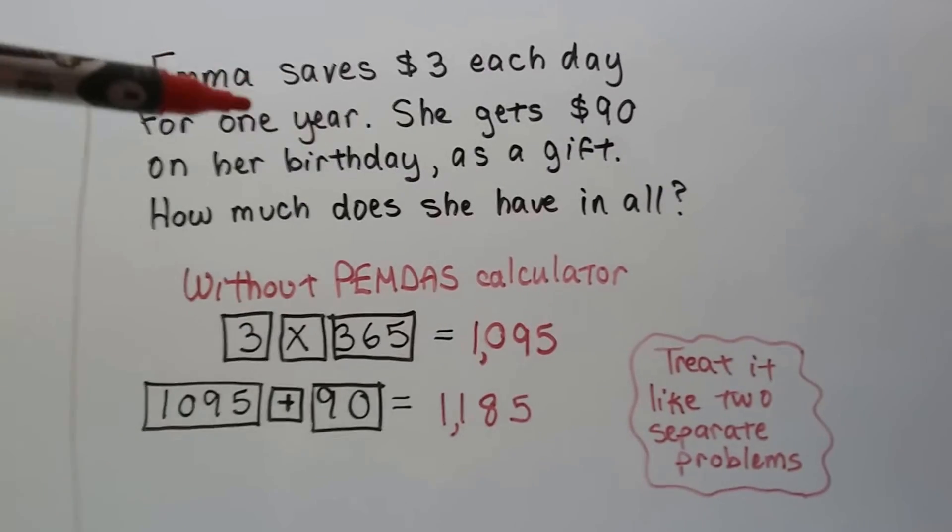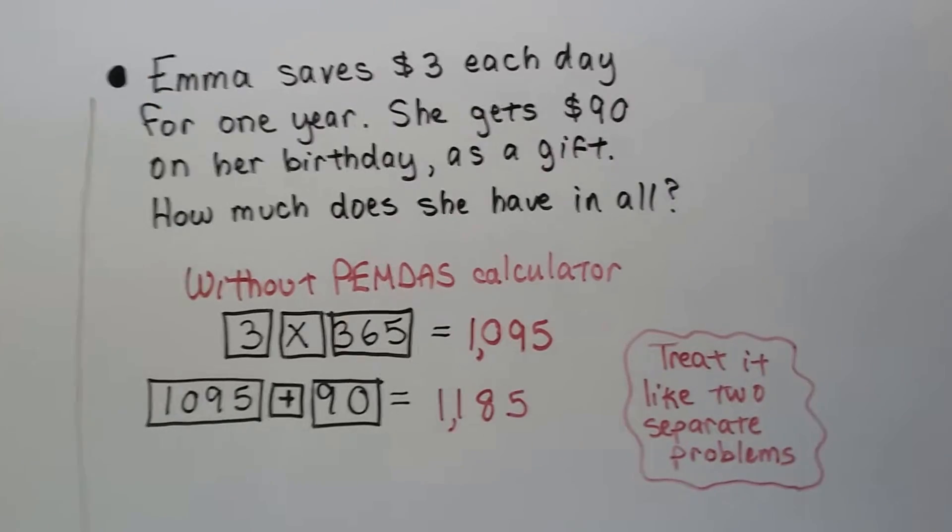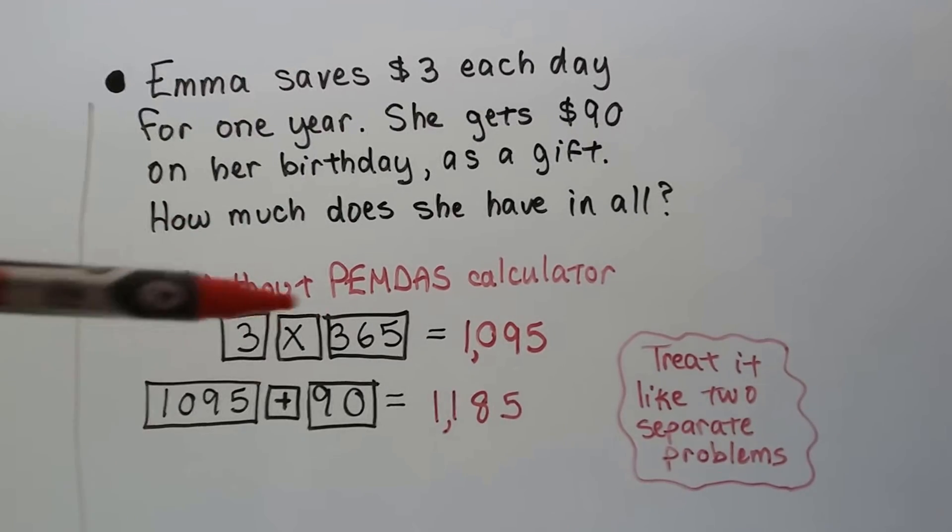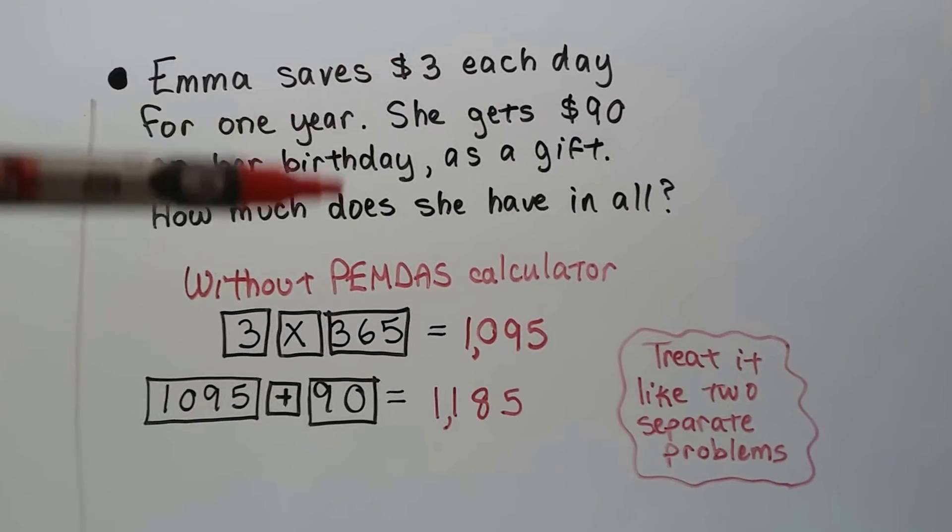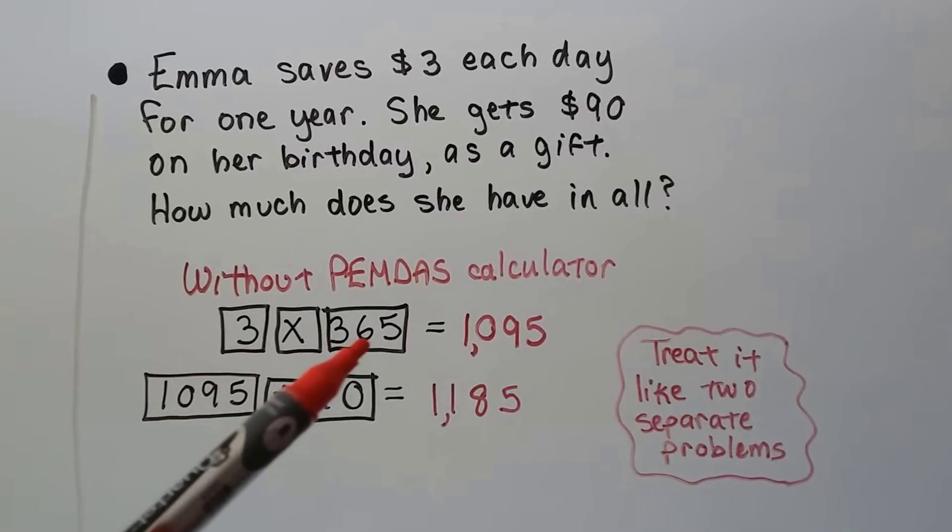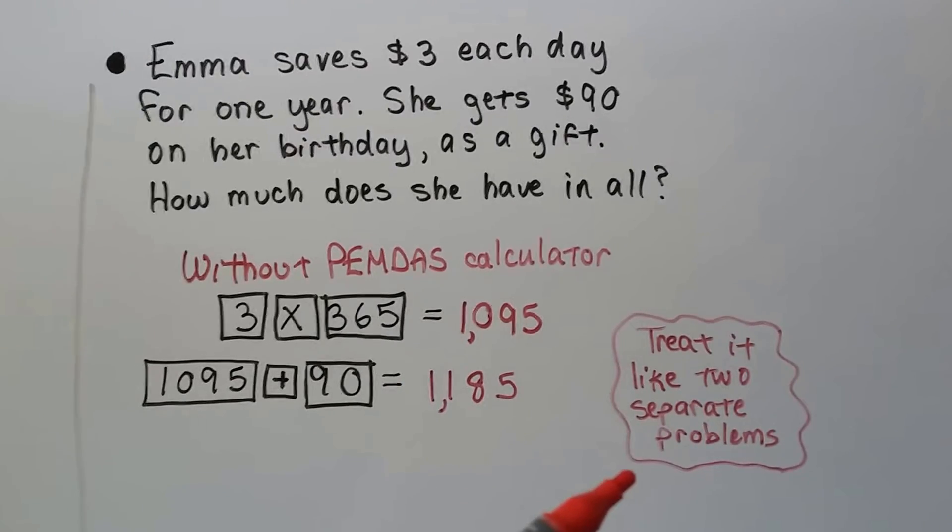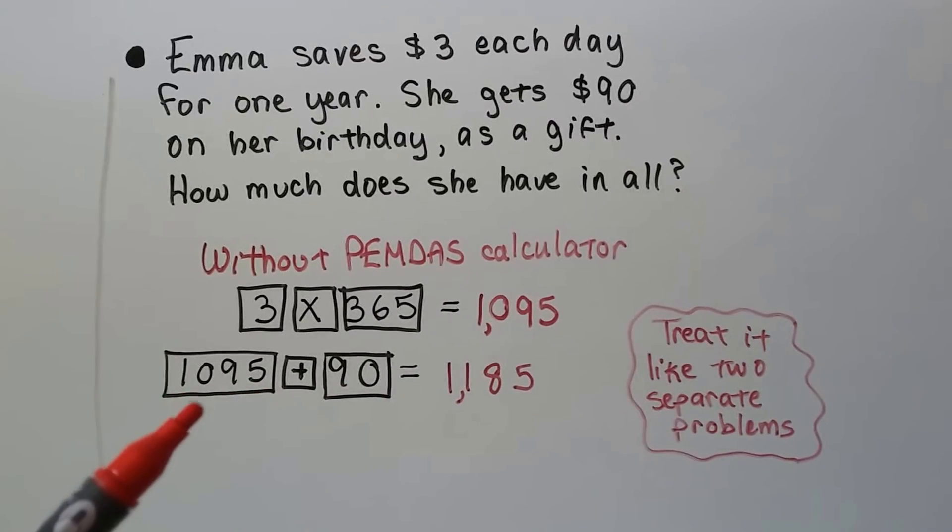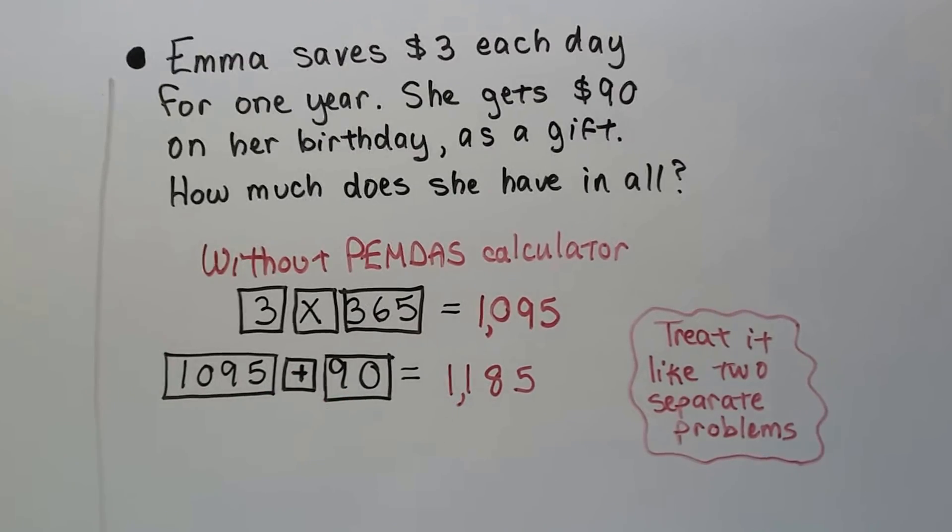We know there's 365 days in a year, and you're going to come across things like this on the GED test. You have to know there's 24 hours in a day, 7 days in a week. You have to know that there's 365 days in a year. Well, if it's $3 each day that she's saving for 365 days, we multiply 3 times the 365. We get 1,095. Clear the calculator because we're treating it like 2 separate problems. Write this down on your scratch paper, then put in 1095 plus 90, and you should get that.